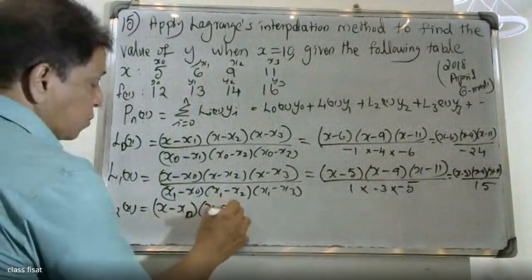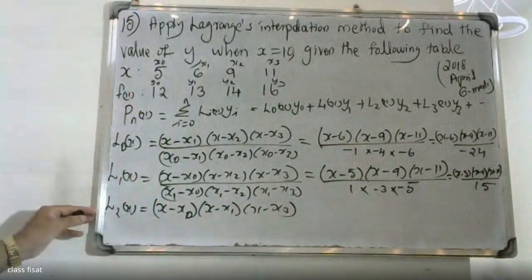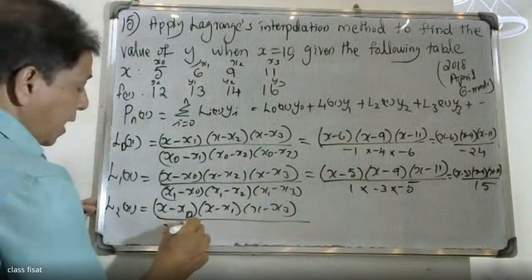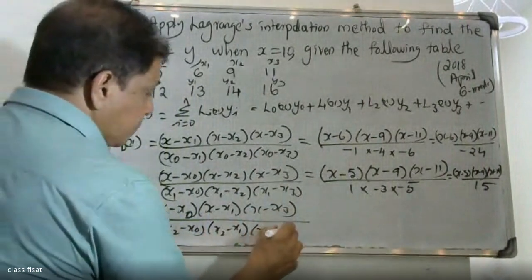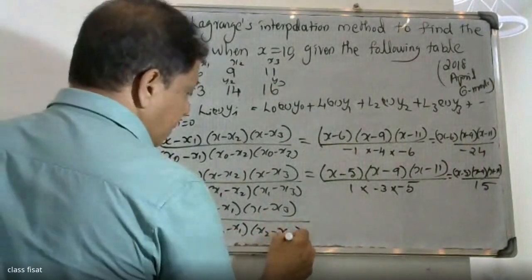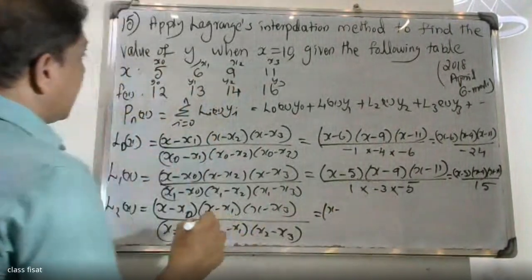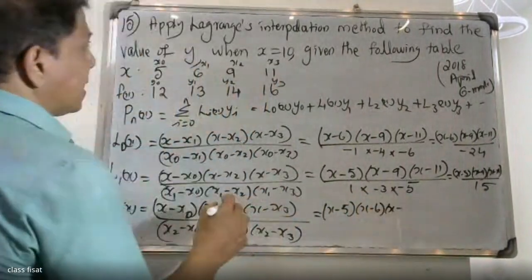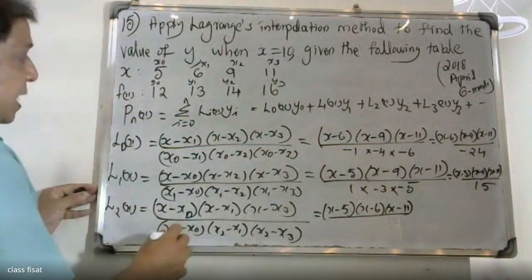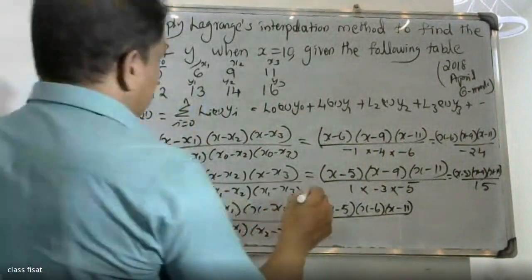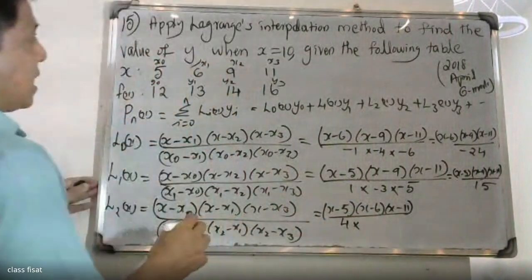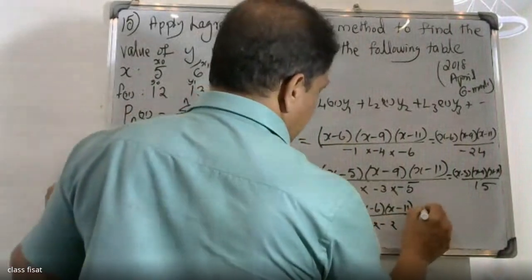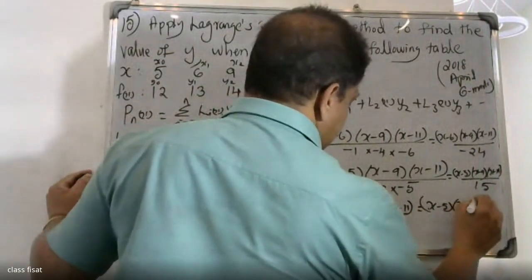For L2(x), the numerator is (x minus x0)(x minus x1)(x minus x3), and the denominator is (x2 minus x0)(x2 minus x1)(x2 minus x3). With x2=9: x2 minus x0 = 9 minus 5 = 4; substituting gives L2(x) = (x minus 5)(x minus 6)(x minus 11) divided by minus 24.